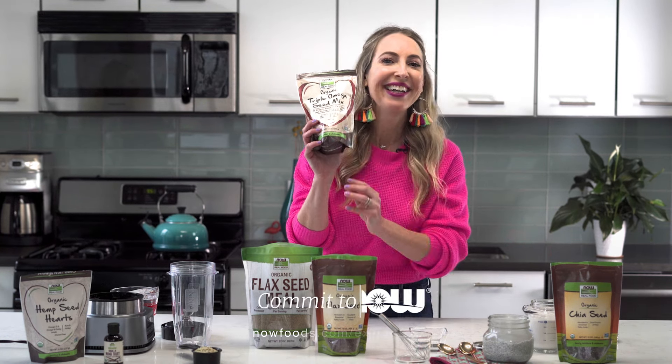Mix one tablespoon of flax seed meal with three tablespoons of water and let it sit for five minutes until it forms a gel. You can use flax eggs in place of real eggs for things like making pancakes, muffins, cookies, brownies, and as a binder for veggie burgers and meatballs.